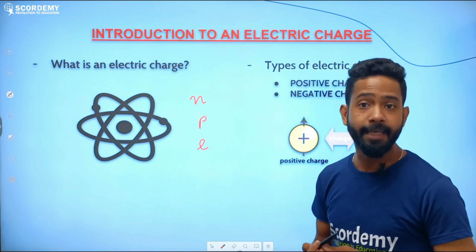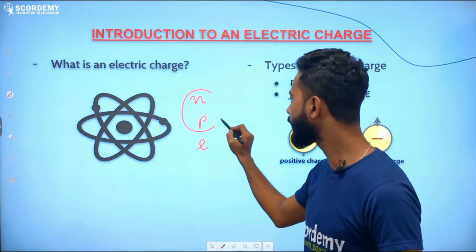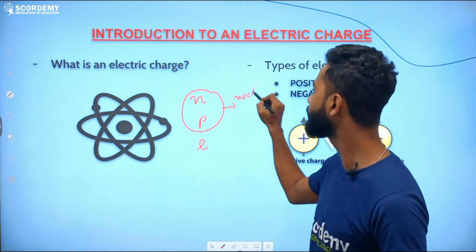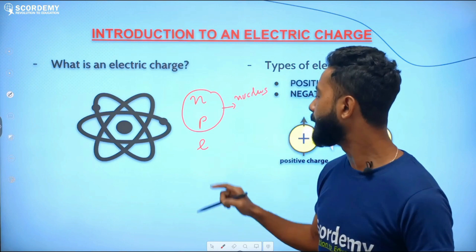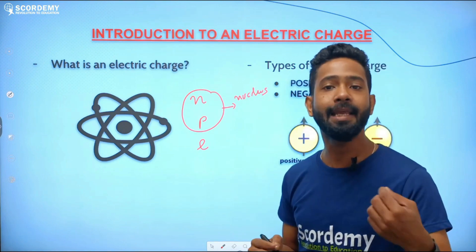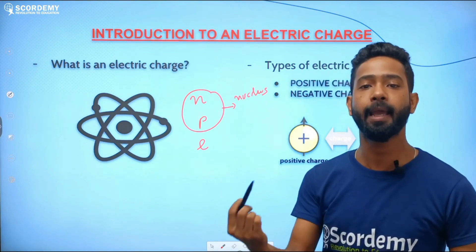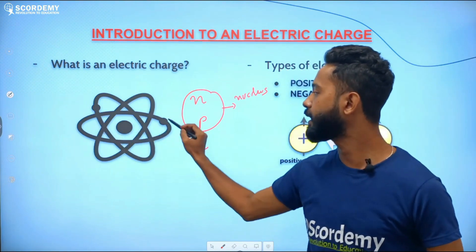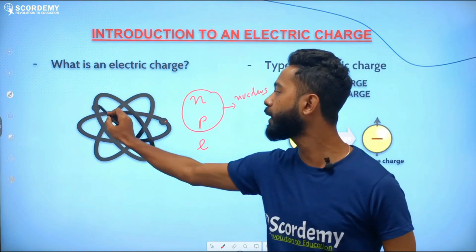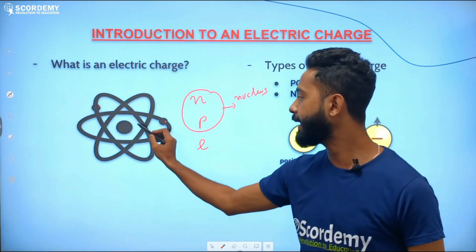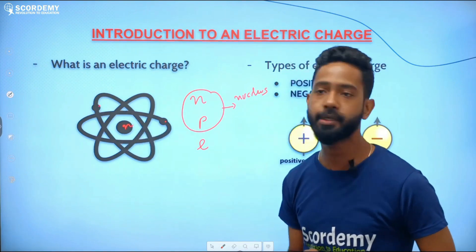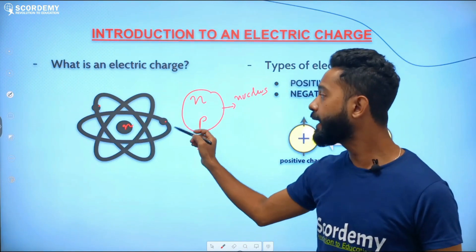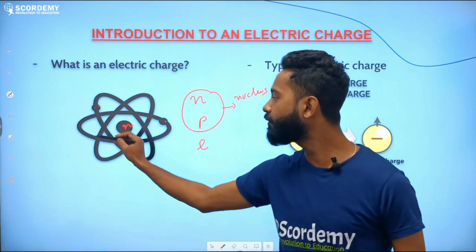The neutron and proton are located in the nucleus — they are at the center of the atom. The electrons revolve around the atom in orbitals or circular orbits. This is our nucleus, where our proton and neutron are located.